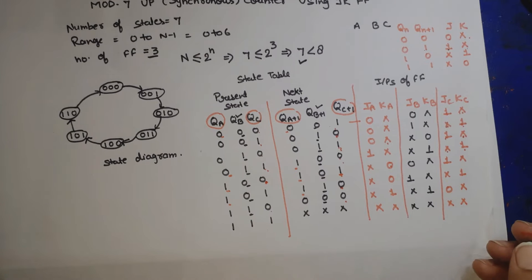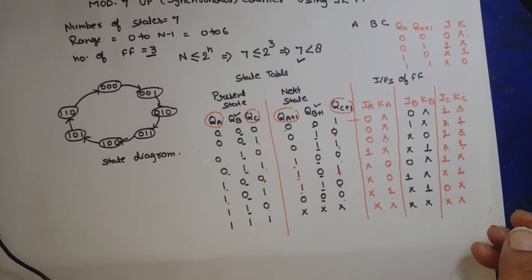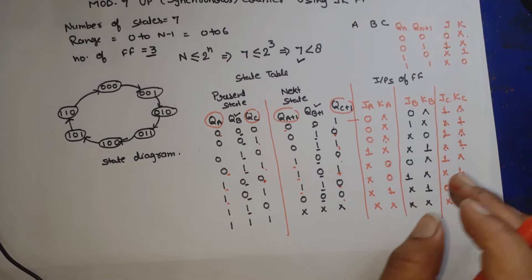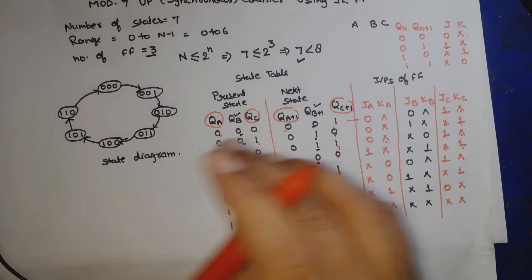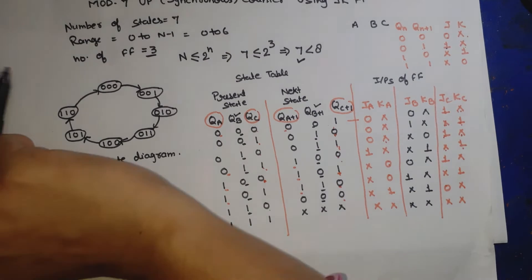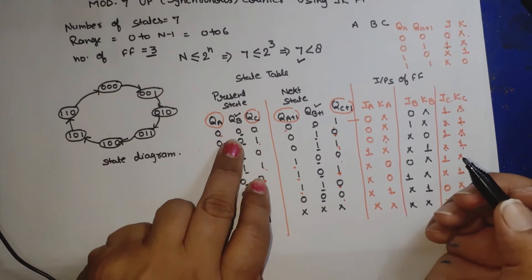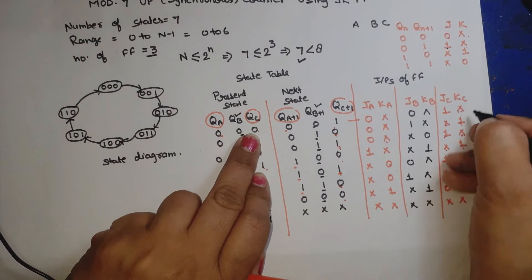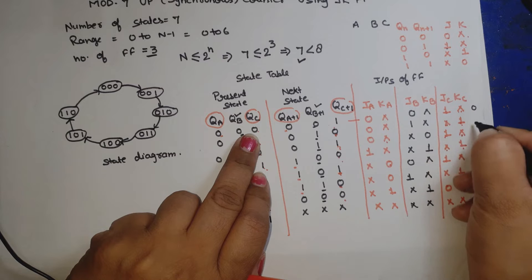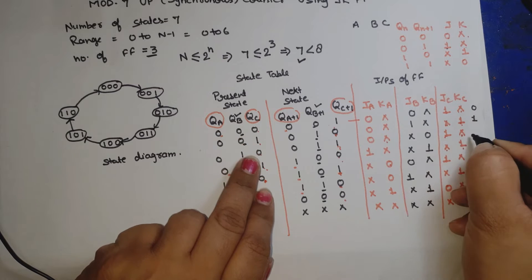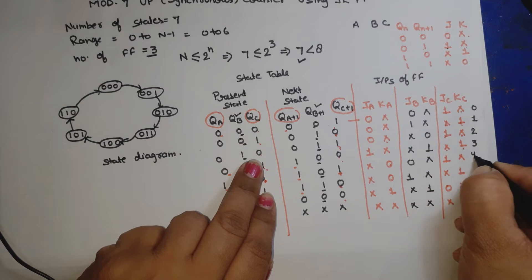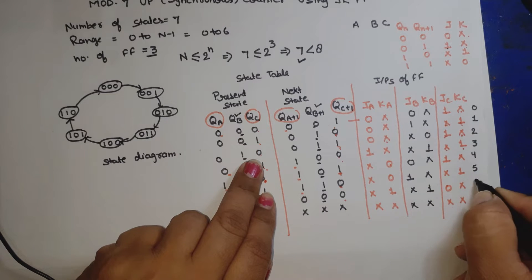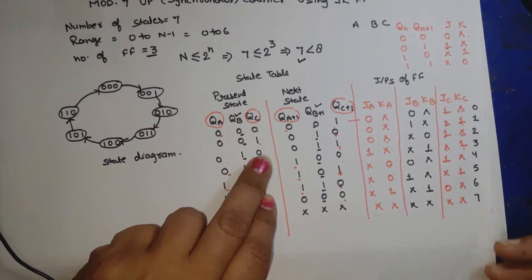Now we write the Boolean equations. For simplicity, we write decimal equivalents: 000=0, 001=1, 010=2, 011=3, 100=4, 101=5, 110=6, 111=7.